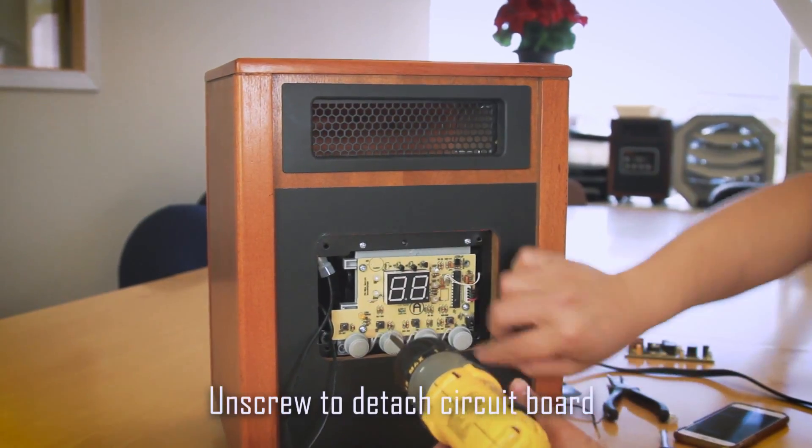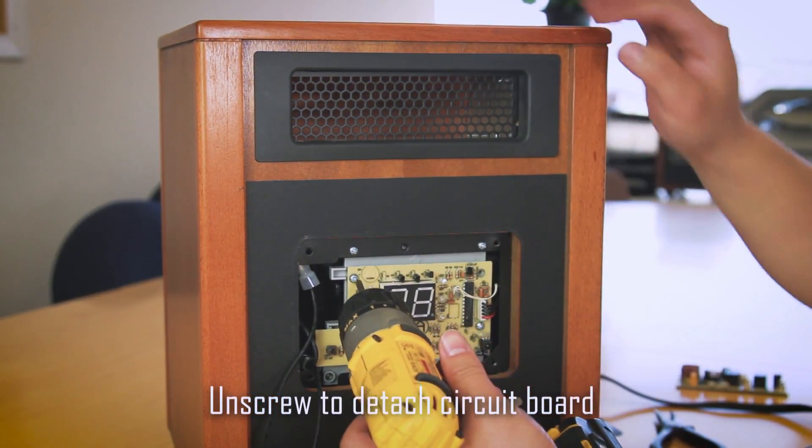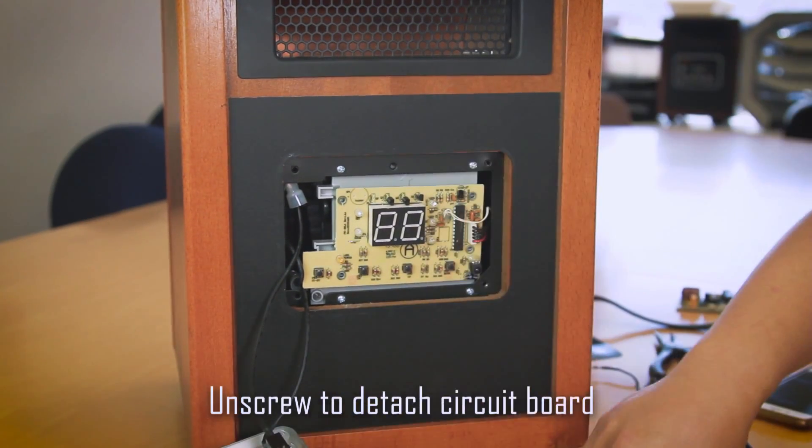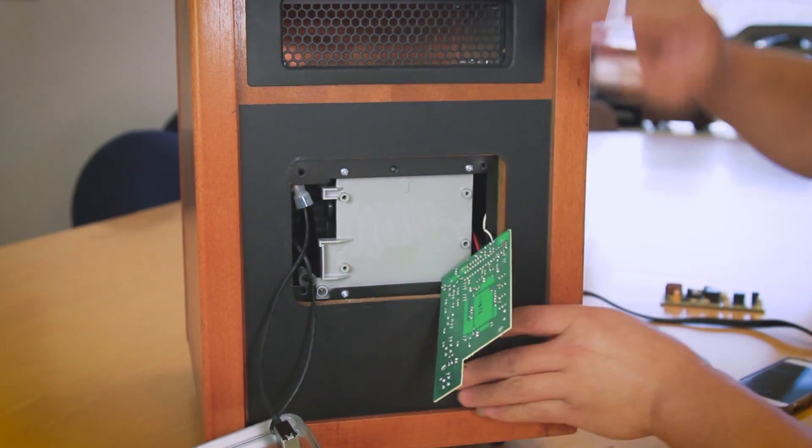Remove the four screws that attach the front circuit board onto the heater. Let the front circuit board gently fall and hang.